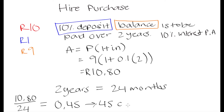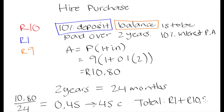The total cost paid back at the end of those 2 years is going to be R10.80 plus the R1 deposit paid at the point of purchase. So in total, we would have paid R1 plus R10.80, which comes to R11.80. The cost of the item was R10, but because we purchased it on a hire purchase agreement, we ended up paying R11.80 — because we had to pay interest on the remaining balance over 2 years. That is how hire purchase agreements work.